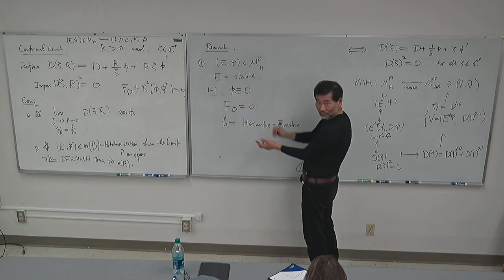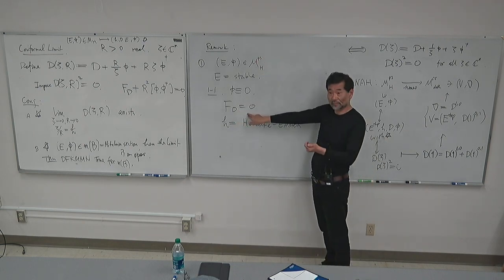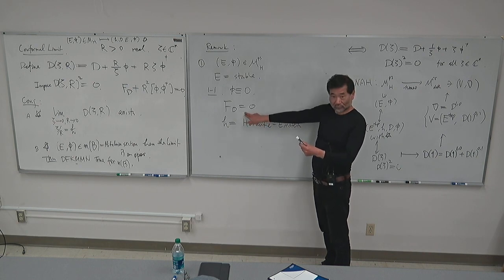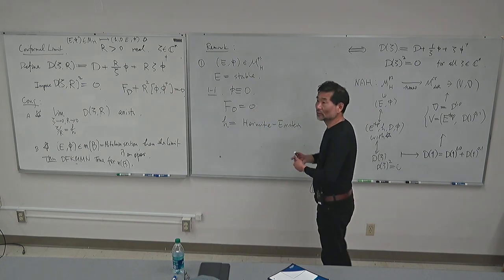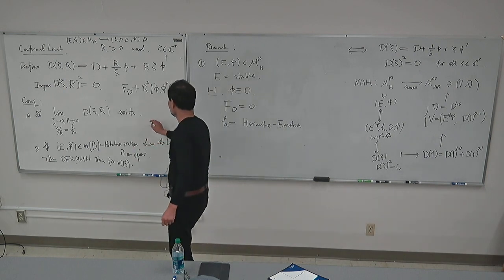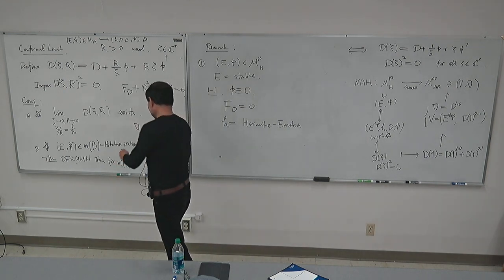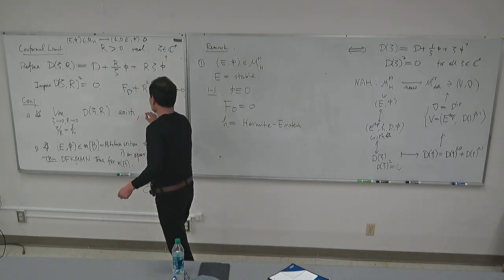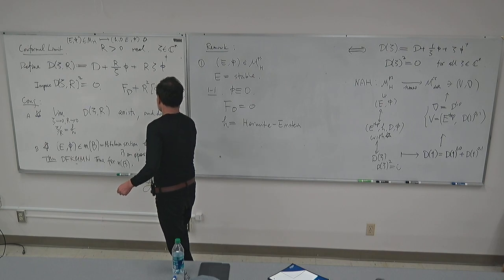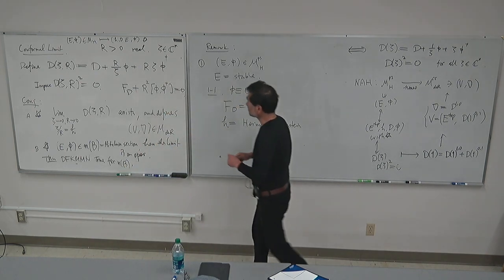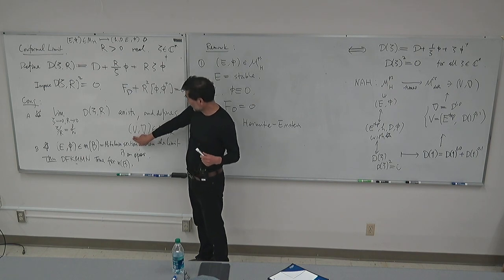In this particular case, what we do is the corresponding map — very easy. If you have (E, φ) where E is stable and φ is anything, no constraint at all, you look at this equation. Still, using the Hermite-Einstein metric, this is equal to zero. I'm choosing Hermite-Einstein once and forever. There is a well-defined object here. But I'm going to make r go to zero. The equation splits: it's trivial because r times φ with r going to zero is equal to zero. In the zero case, we are already done.